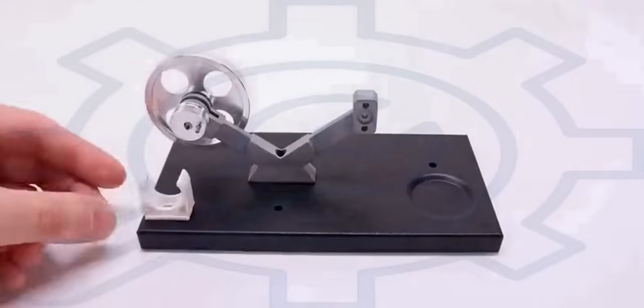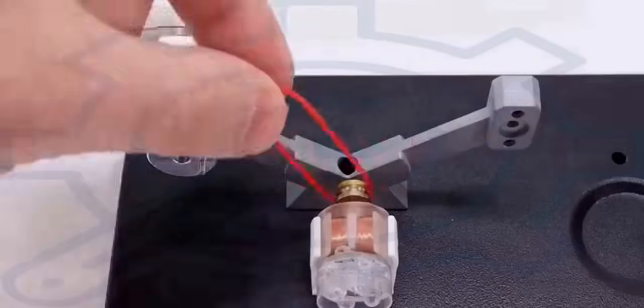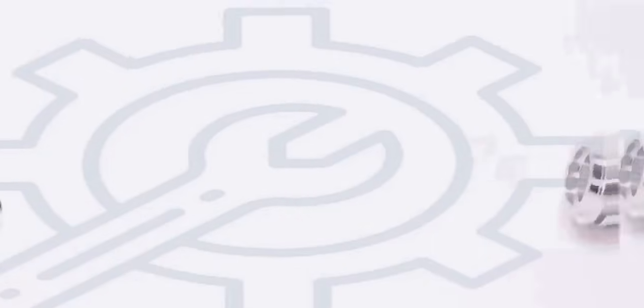A Stirling engine is a heat engine that is operated by the cyclic compression and expansion of air or other gas, the working fluid, between different temperatures, resulting in a net conversion of heat energy to mechanical.